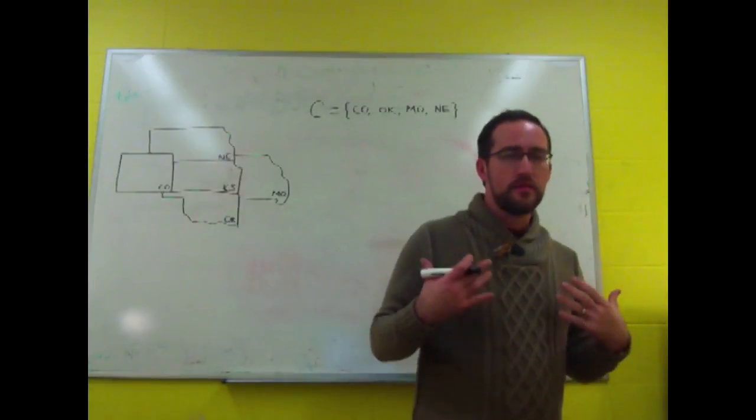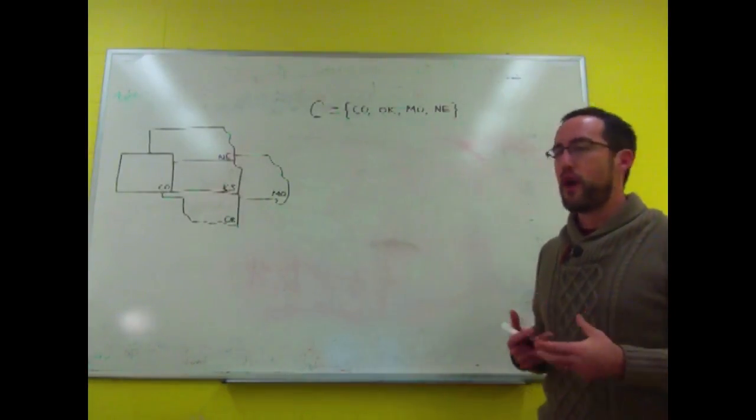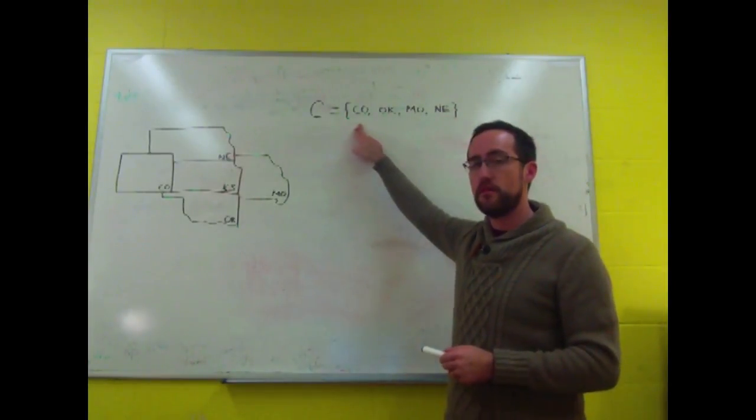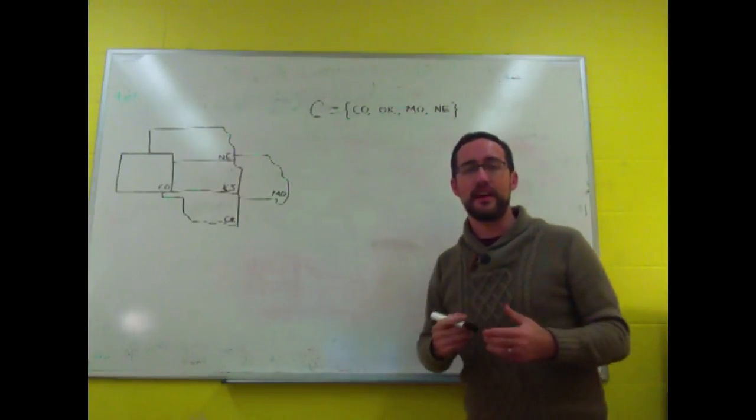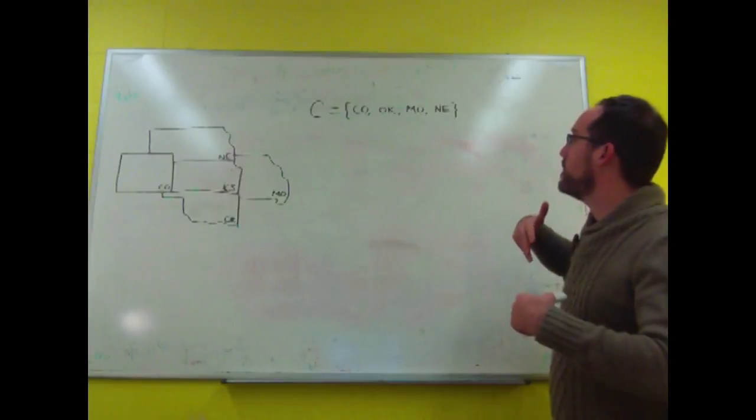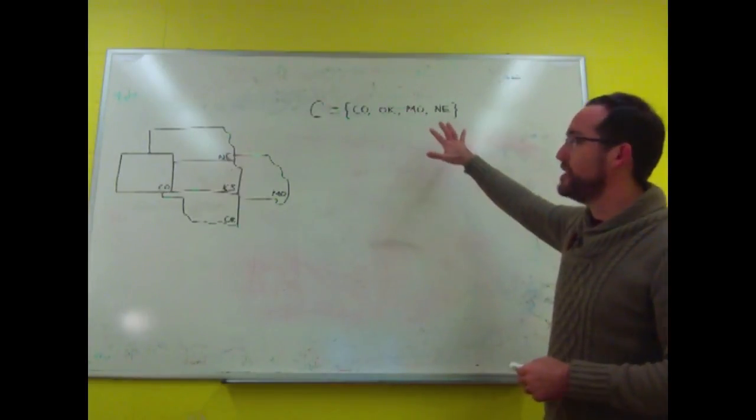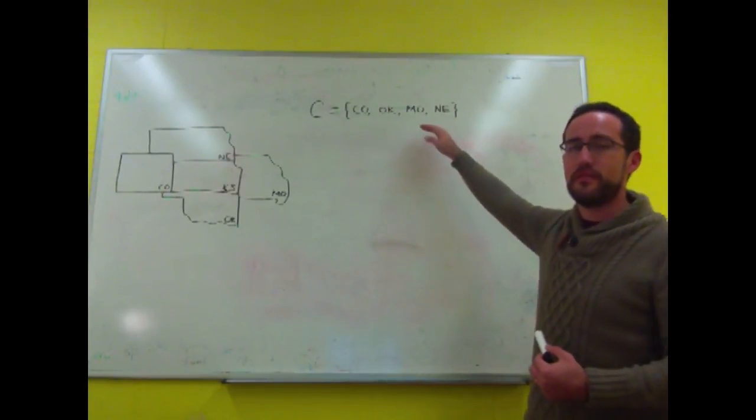Now when we say abstraction, what we can do then is find a property that picks out all of these states and no other states. And in that case, we have an identity relation. That is, we'll have a set that is identical to this one.